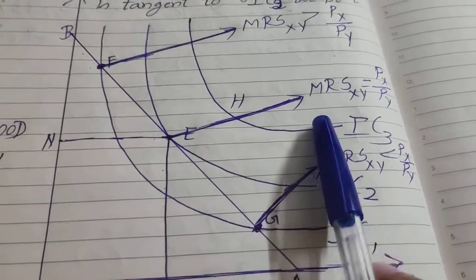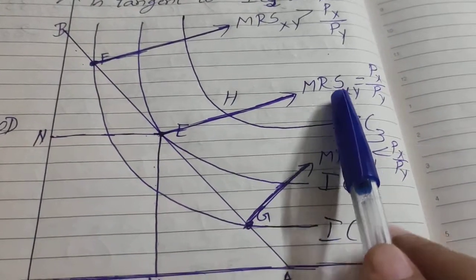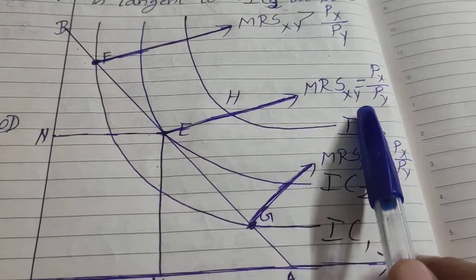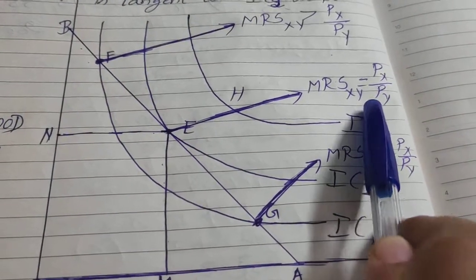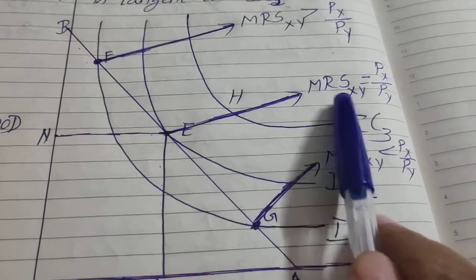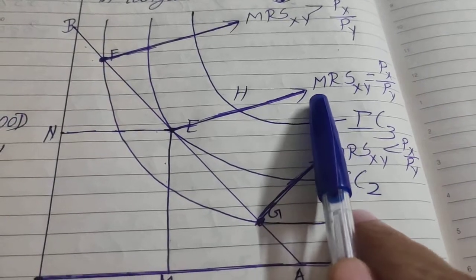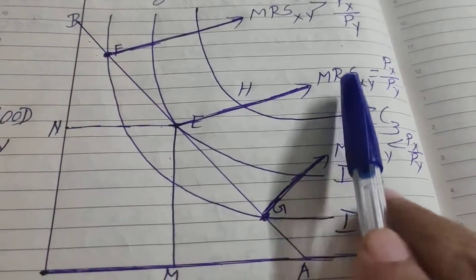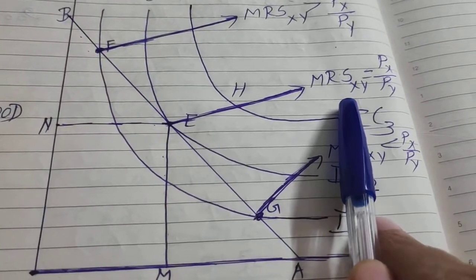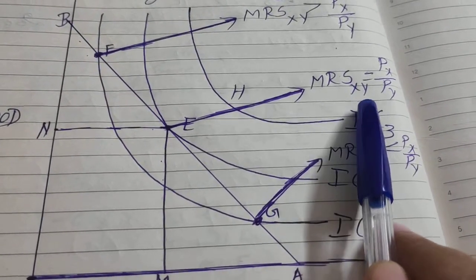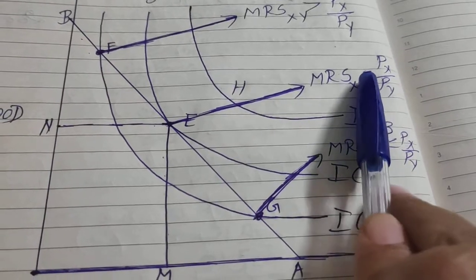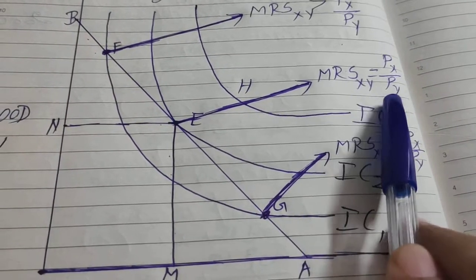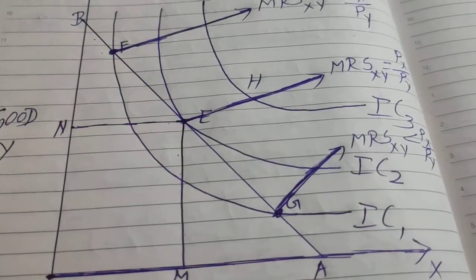First condition is MRS_xy equal to Px upon Py. MRS_xy means marginal rate of substitution of X and Y, which is equal to price of X upon price of Y.